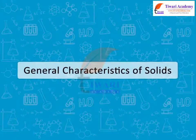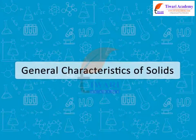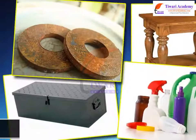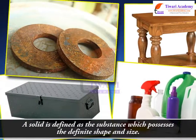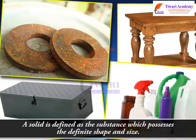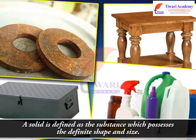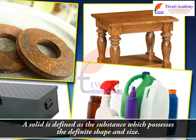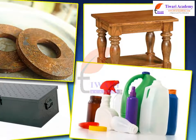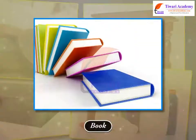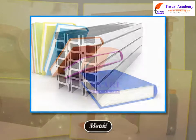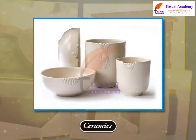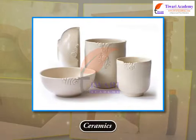General Characteristics of Solids. A solid is defined as the substance which possesses a definite shape and size. For example, book, metal, and ceramics, etc.